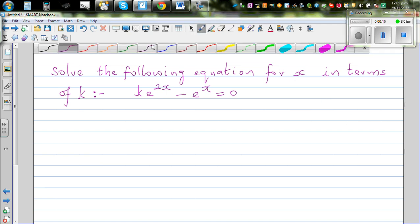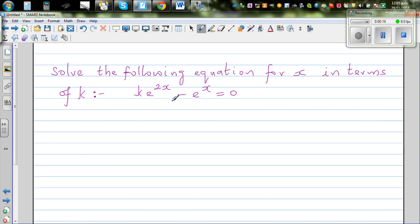This equation looks difficult but it's not that difficult as it looks. So we want to solve for x in terms of k. So what can we do? Let me write this equation again. k times e to the power 2x minus e to the power x equals 0.